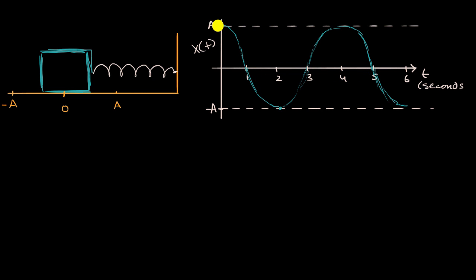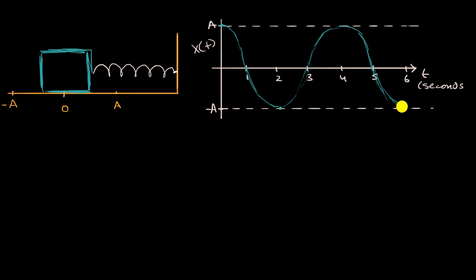It'll start at position A, then oscillate to the left to position negative A, then oscillate to the right to position A again, on and on and on, forever — if we're dealing with a frictionless surface and no air resistance.